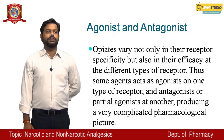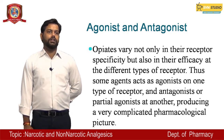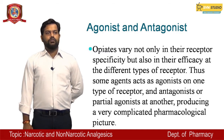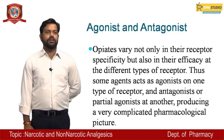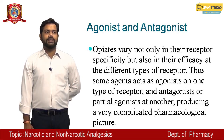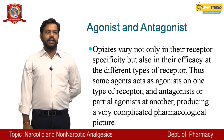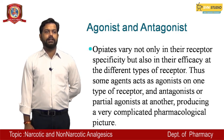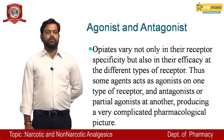Agonist and antagonist: opioids vary not only in their receptor specificity but also in their efficacy. Some agents act as agonists on one type of receptor and as antagonists or partial agonists at others, producing a very complicated pharmacological picture.